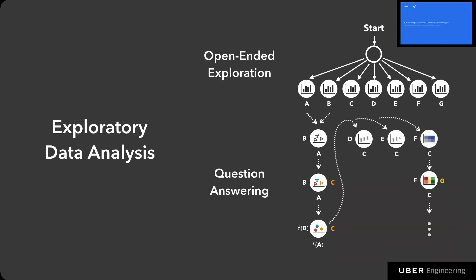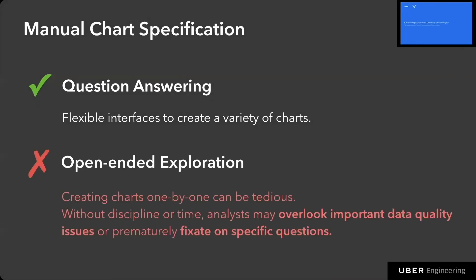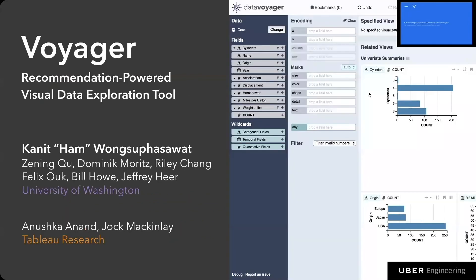This is an ideal scenario, but if you think about current tools like VegaLite, ggplot, or Tableau — they are very powerful and you can do a lot of question answering — but for open-ended exploration, creating charts one by one can be tedious. For analysts without discipline or time, they may overlook important data quality issues like errors in the data, or may prematurely fixate on specific questions. That's where the tools we built come into play to tackle this problem.